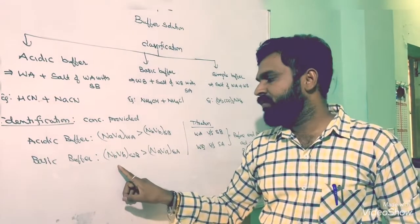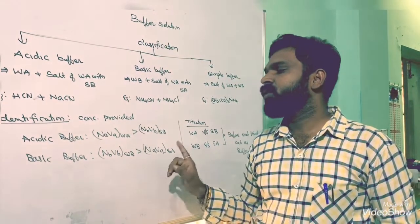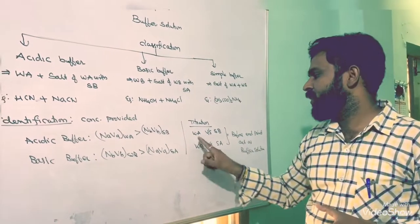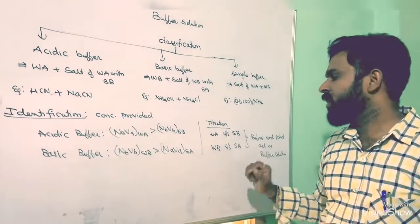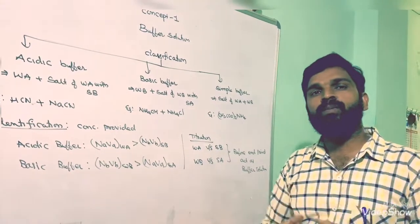when number of equivalents of weak base is greater than number of equivalents of strong acid, we get a basic buffer solution. In any titrations of weak acid versus strong base, or weak base versus strong acid, before the endpoint, a buffer solution will be formed.